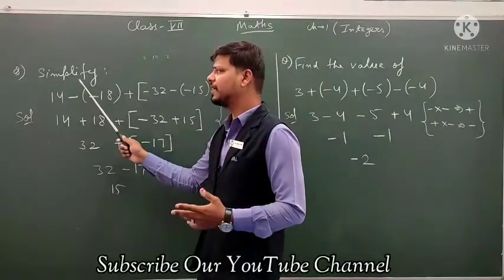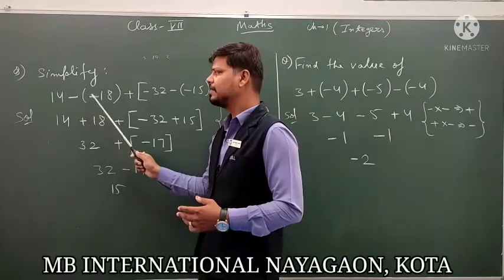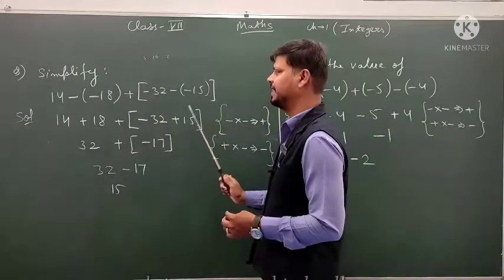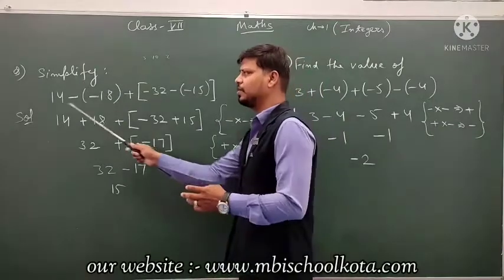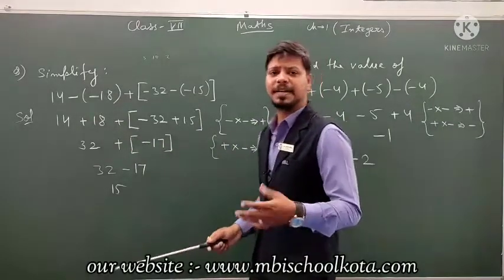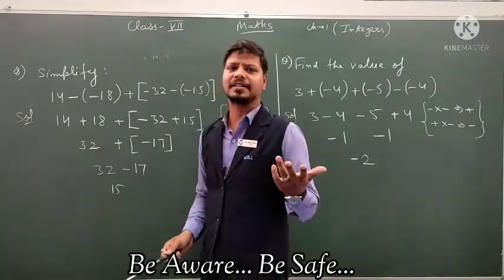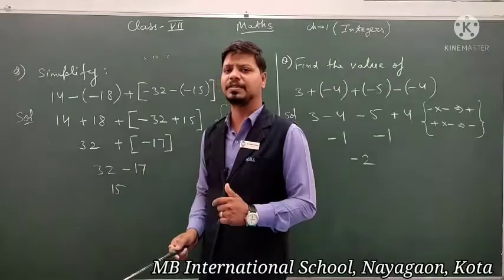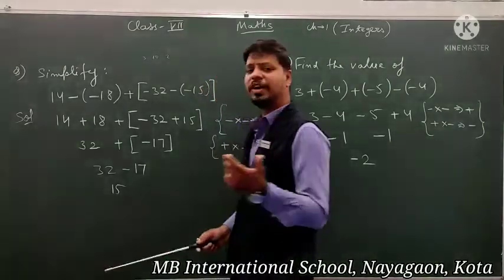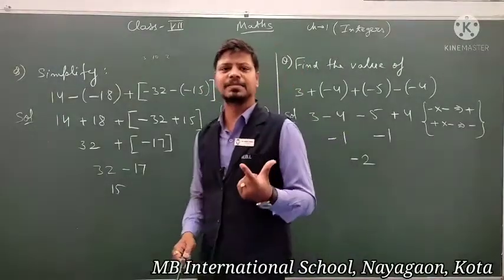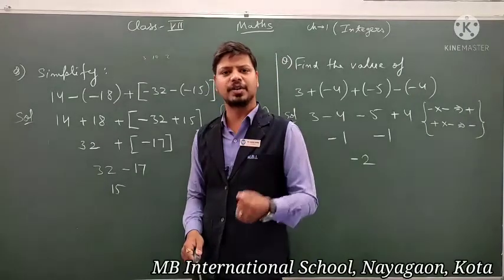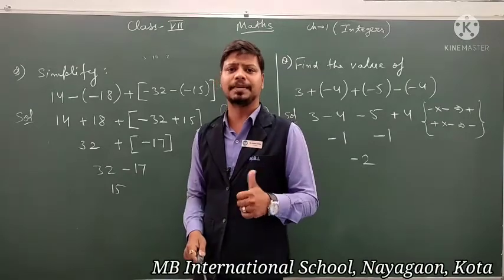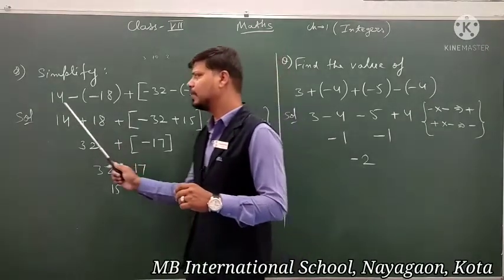Now, simplify: 14 minus minus 18 plus minus 32 minus minus 15. The rule is: same sign integers — when same sign integers are added, the greater number's sign will come. For opposite sign integers, subtract and the greater number's sign will come. That is the rule to apply.